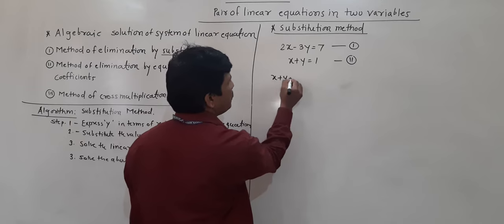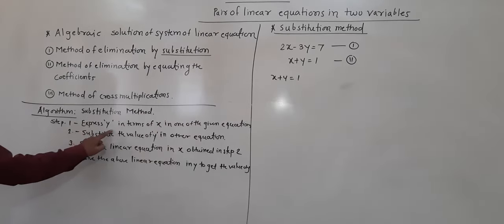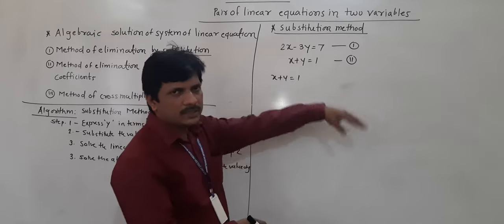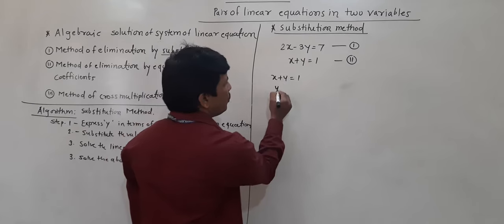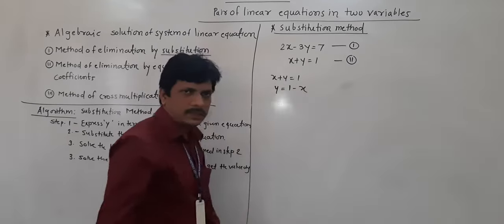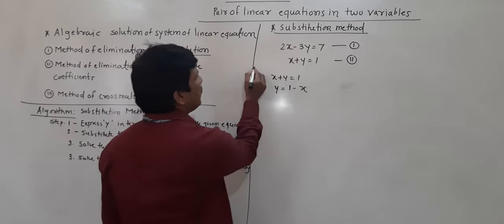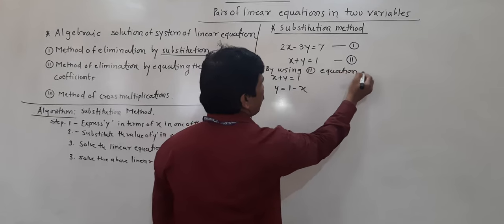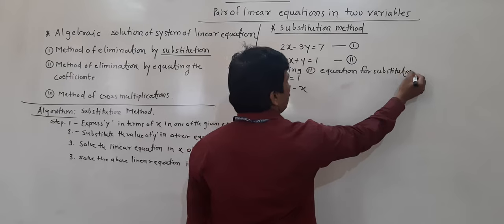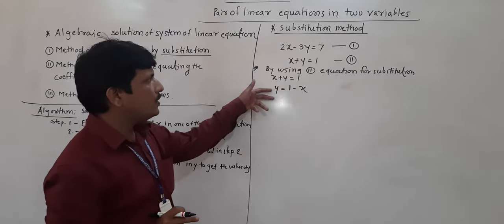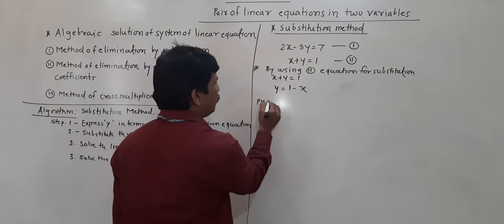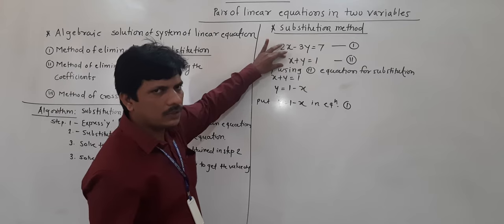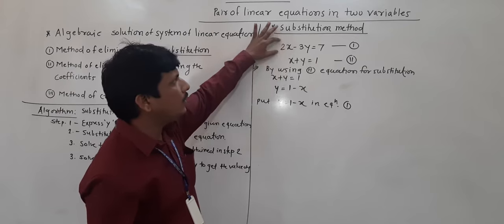Taking x plus y is equal to 1 — here what is the first step? We express y in terms of x from this equation. So y is equal to 1 minus x, from the second equation. Now, put y is equal to 1 minus x in equation 1, because we have taken the second equation for substitution. This value of y we will put in equation 1.